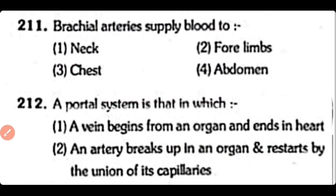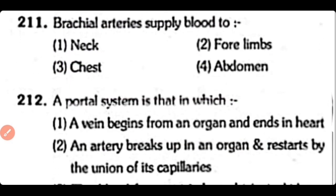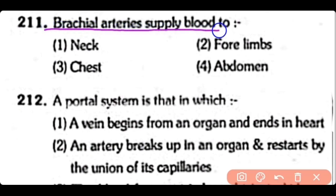Q211. Brachial arteries supply blood to the neck, four limbs, chest, or abdomen. So the correct answer is Option 2 — brachial arteries supply blood to the four limbs.